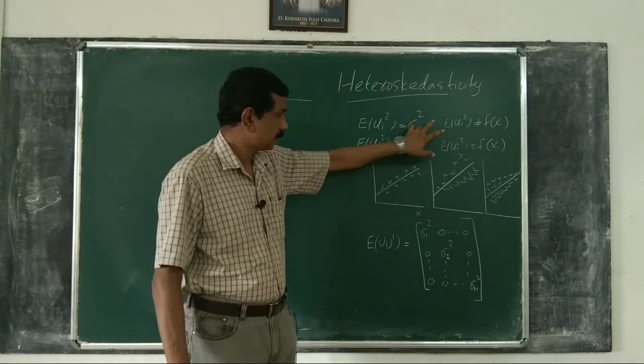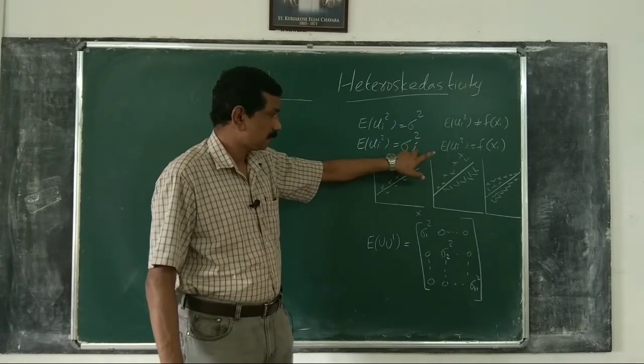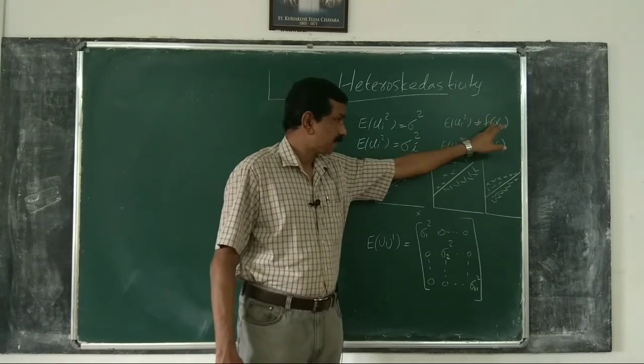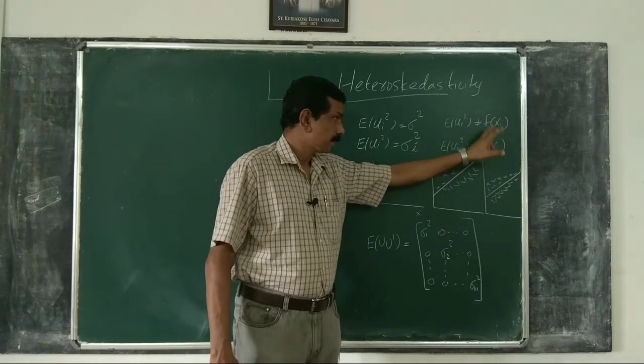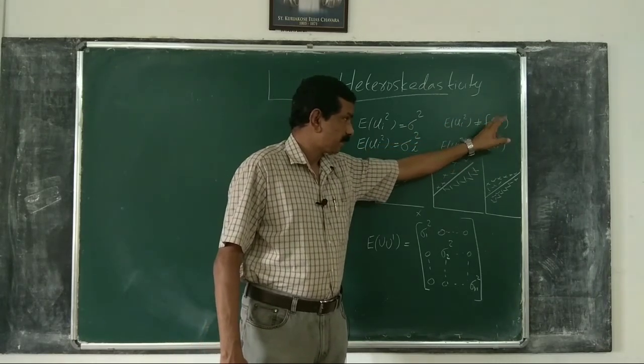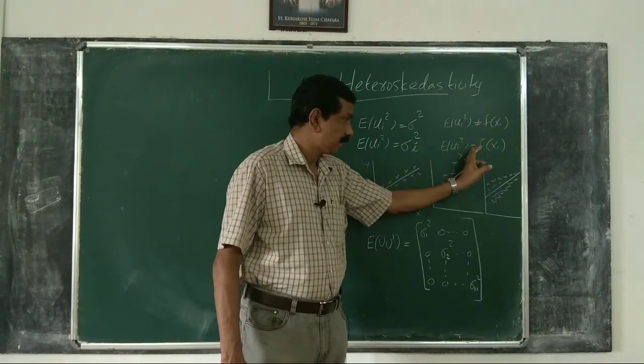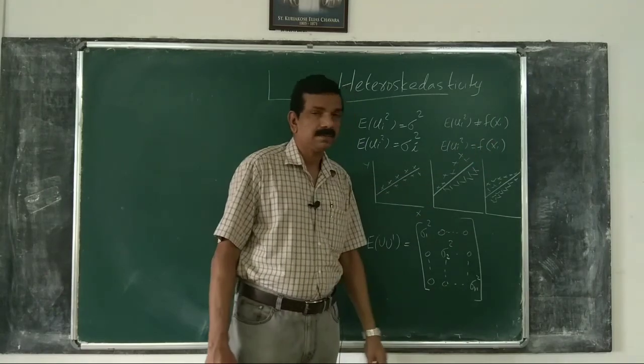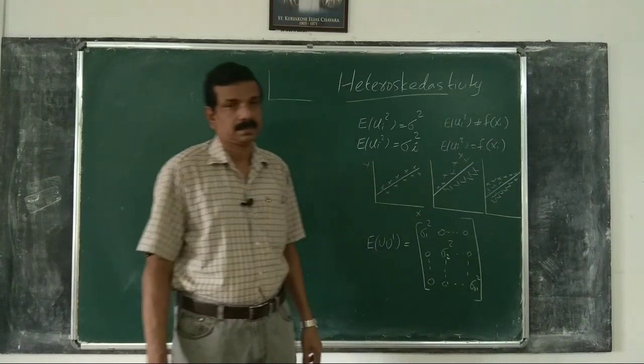So this is heteroscedasticity versus homoscedasticity: homoscedasticity means error variance is not a function of X; heteroscedasticity means error variance is a function of X.